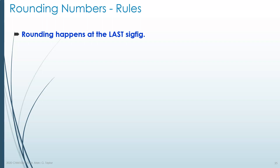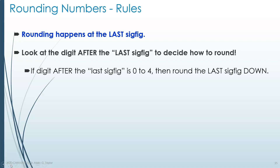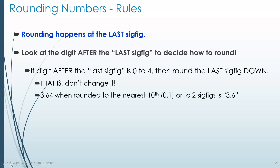Rounding happens at the last significant digit, and it happens by looking at the digit after the last significant digit to decide how to round. If the digit after the last significant digit is 0 to 4, then we round the last significant digit down, meaning we don't change it at all. For example, 3.64 rounded to the nearest tenth — where the 6 is — would be rounded to 3.6.